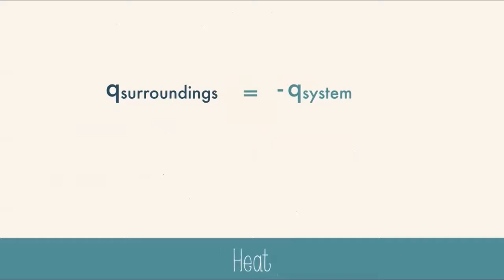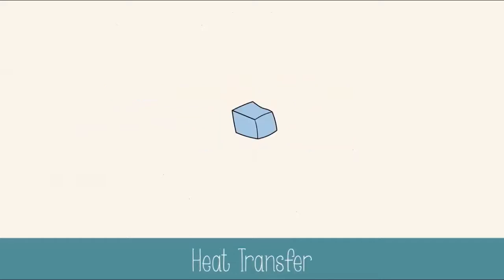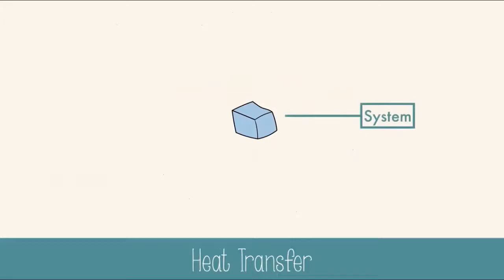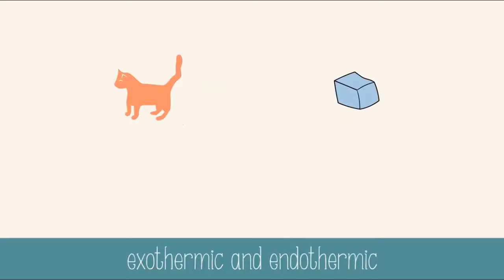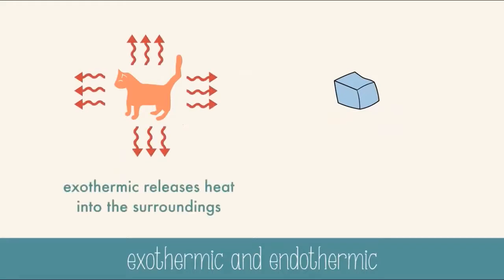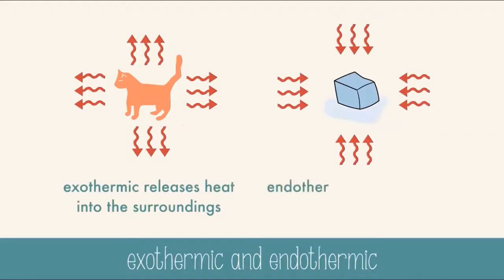Heat lost or gained could be the other way around. Consider the scenario of the ice cube: the ice cube is the system, and the surroundings include the air and the surface. Heat is leaving the surroundings and moving into the ice cube, which causes it to melt. Notice — it's not the cold that moves, it's always the heat that moves. This time, Q of the system is positive and Q of the surroundings is negative. The cat and ice cube examples are great examples of exothermic and endothermic processes: the cat releases heat into the surroundings — exothermic (out-heat); the ice cube absorbs heat — endothermic (in-heat).